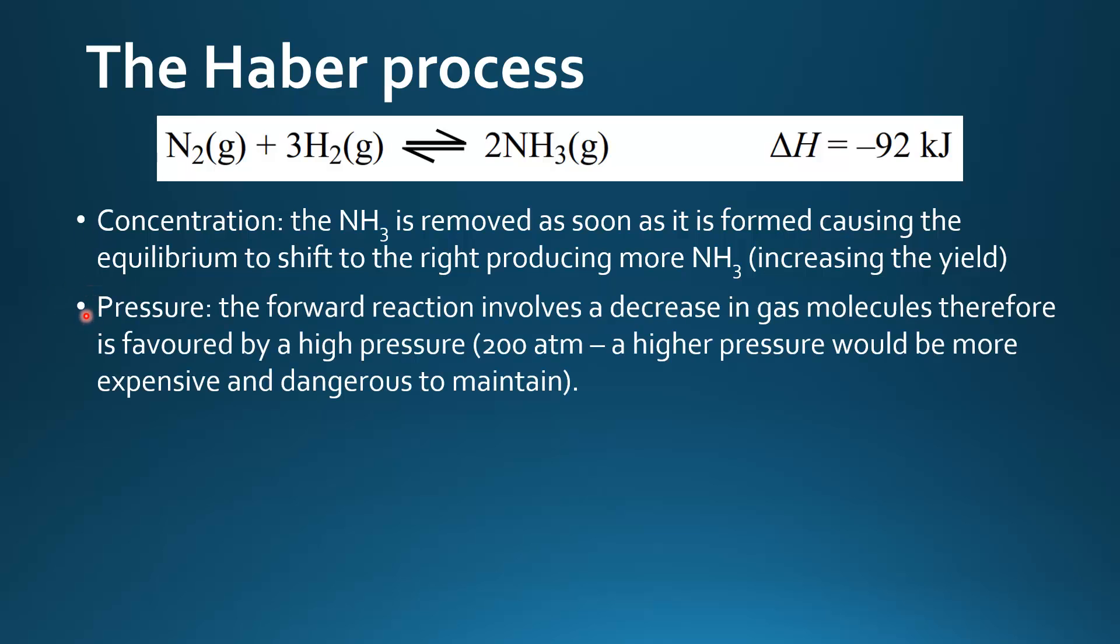Next is pressure. The forward reaction involves a decrease in gas molecules. We have four gas molecules on the left and two on the right. Therefore is favored by a high pressure. The pressure used is 200 atm, that's 200 times atmospheric pressure. A higher pressure would be more expensive and dangerous to maintain even though it would result in a higher yield.